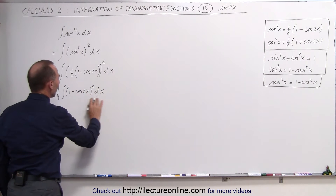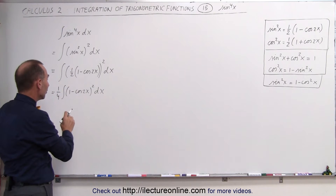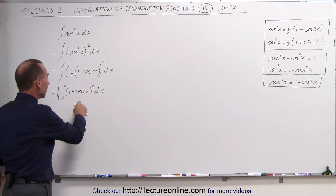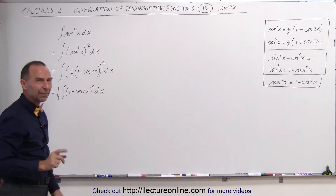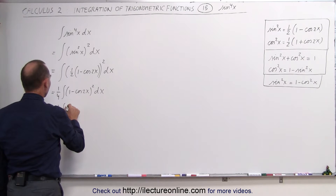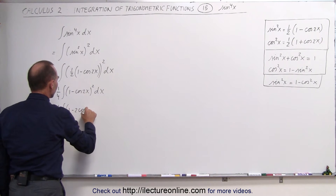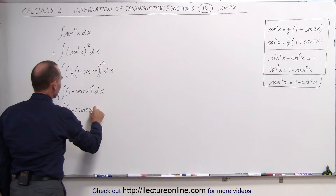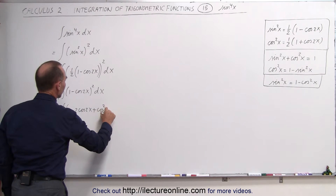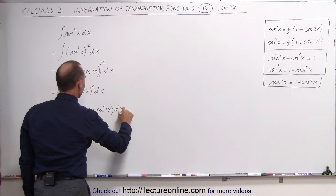Now if we square this out, what we're trying to do is make it as simple as possible so we have everything to the first power, which makes it easier to integrate. This is equal to one quarter times the integral of 1 minus 2 times the cosine of 2x plus the cosine squared of 2x, times dx.